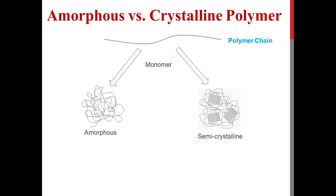Therefore, chains of some polymers like polycarbonate, ABS, and polysulfone always form a randomly oriented structure called the amorphous region, and therefore these polymers are called amorphous polymers. On the other hand, chains of polypropylene, polyester, and polyamide are sufficiently flexible to fold, and thus they can form a crystalline phase. Therefore, these polymers are called crystalline polymers.